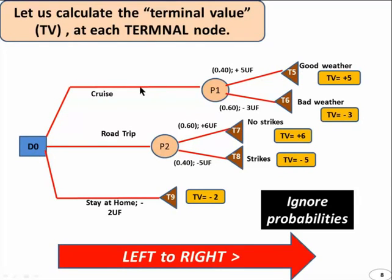So we come along this. There could be numbers here, but in this case, we don't have any. And there's only a five. So we say TV is plus five. Come back along this. TV is minus three. TV is plus six, et cetera. And here is just a minus two. So we have all the terminal values.